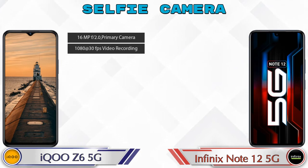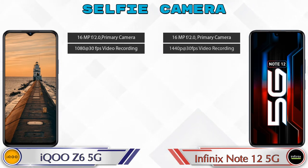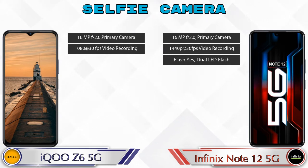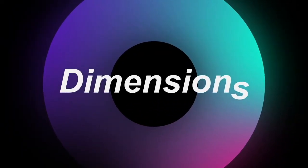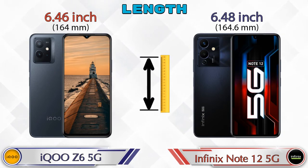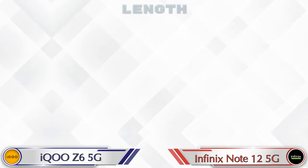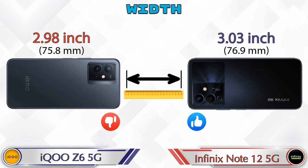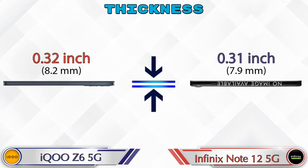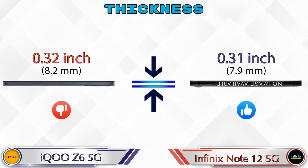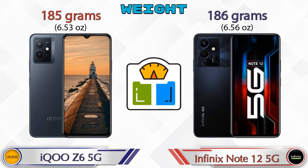For the front selfie camera, the iQOO Z6 5G has a single camera with two features, and the Note 12 5G also has a single camera but with three features. Regarding dimensions, the iQOO Z6 5G is 6.46 inches long and the Note 12 5G is 6.48 inches. Width is 2.98 inches on the iQOO Z6 5G and 3.03 inches on the Note 12 5G. Thickness is 0.32 inches versus 0.31 inches.